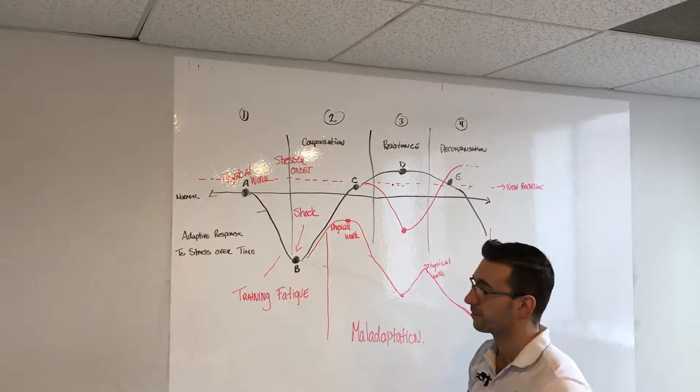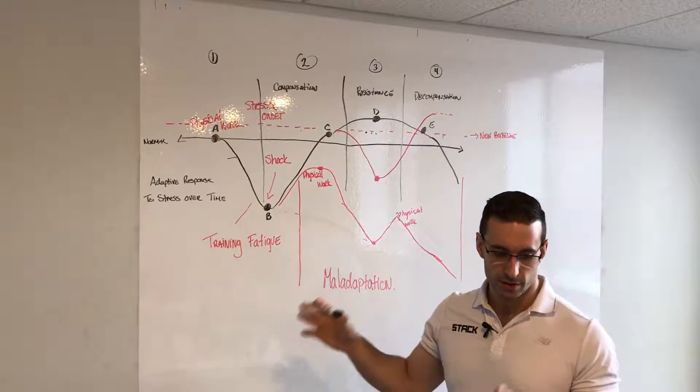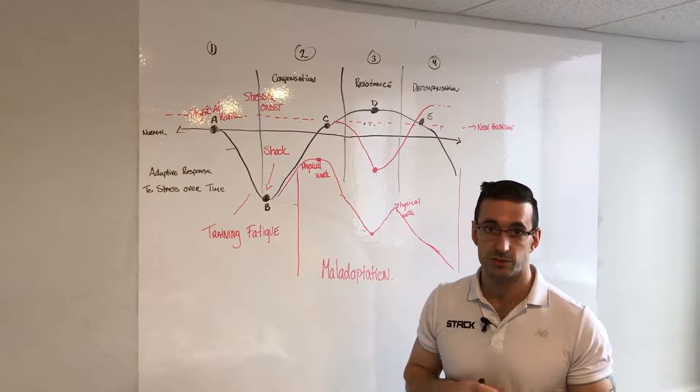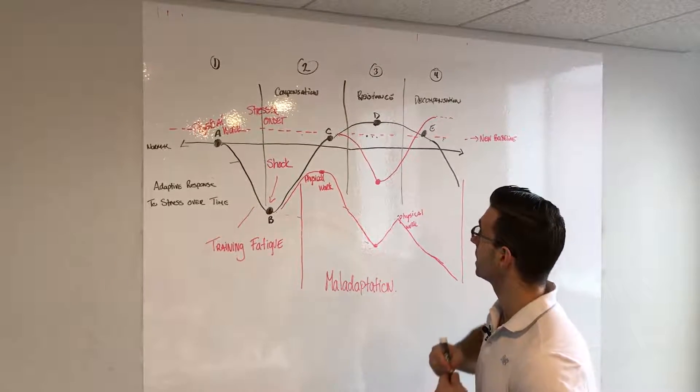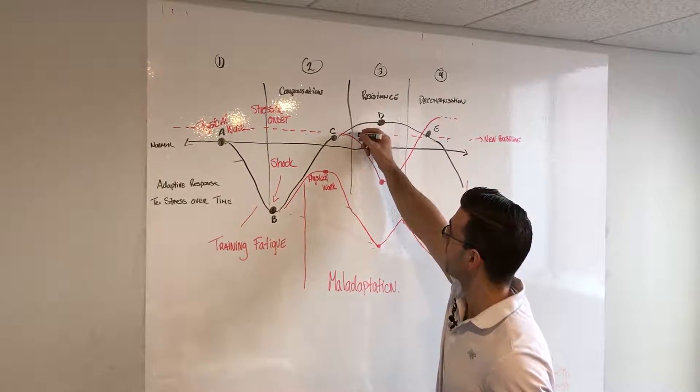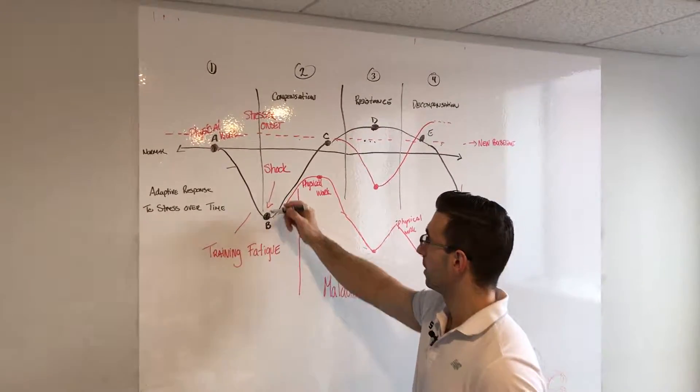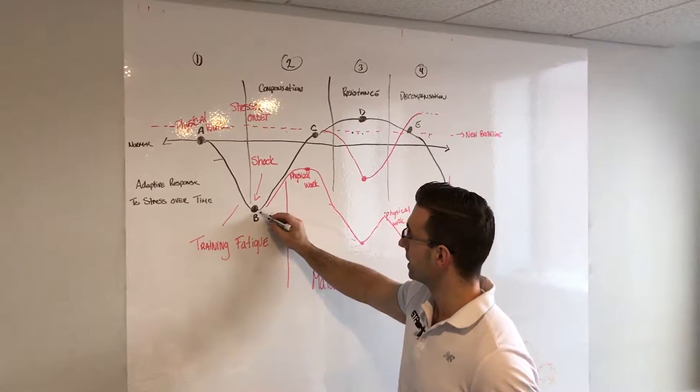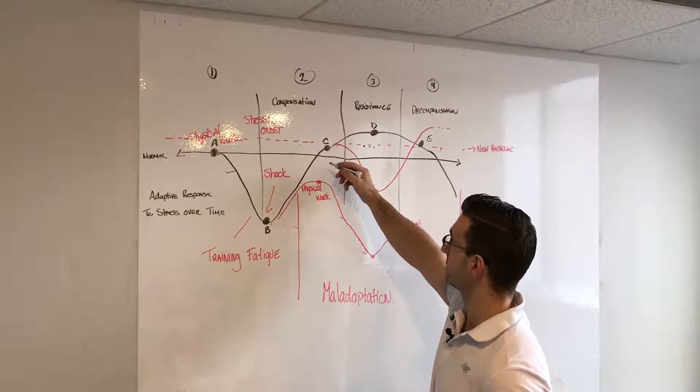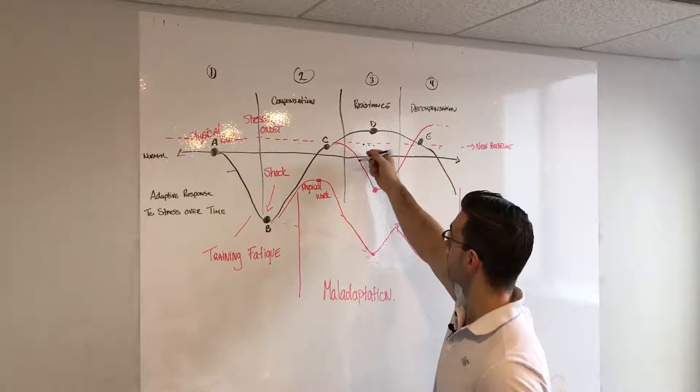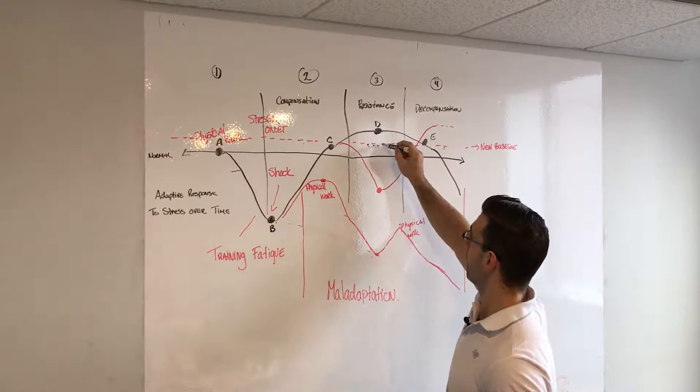The general adaptation syndrome has three phases: the alarm, the resistance, and the super compensation phase. Super compensation is up here at this red dotted line. What will happen is a training session occurs, we'll see a decrease in performance down here, and then when we go through the resistance phase, hopefully the body recovers and we see an improvement in performance up here.